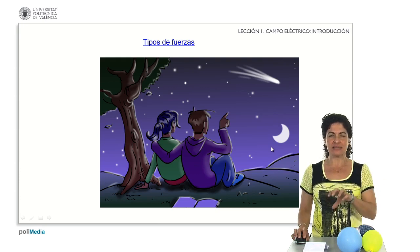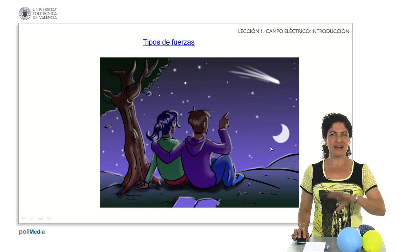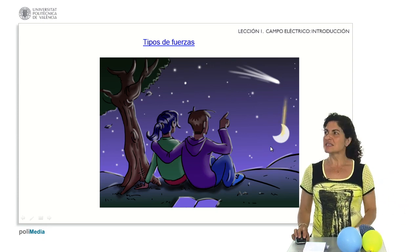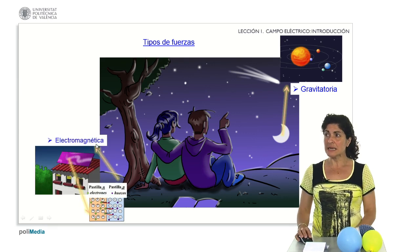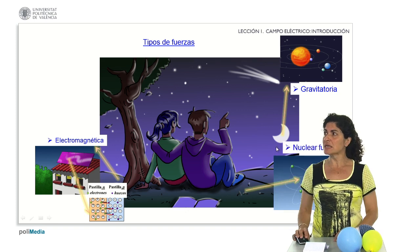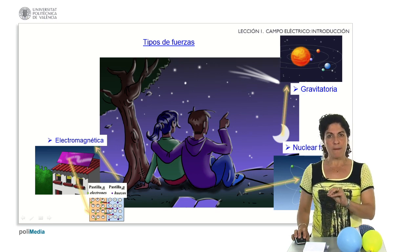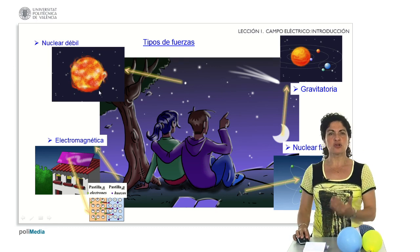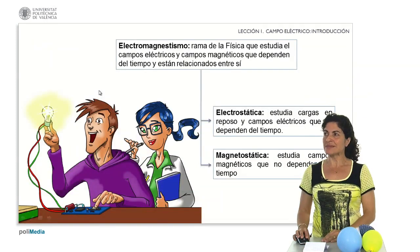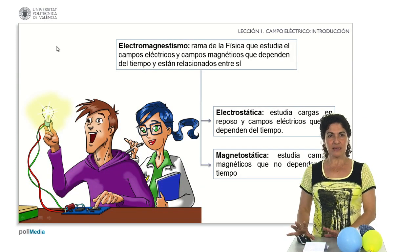If we think about the great variety of interactions acting on bodies that can modify their state of movement, all of them can be grouped into four categories: the gravitational interaction, the weakest of them; the electromagnetic one, present in a great variety of technological applications; the strong nuclear interaction, responsible for atomic nuclei remaining united despite being made of same-charge particles; and the weak nuclear interaction, responsible for beta disintegration in the sun. We are now going to focus on the study of electromagnetism.